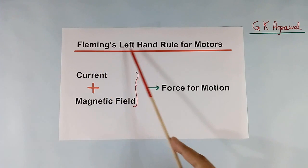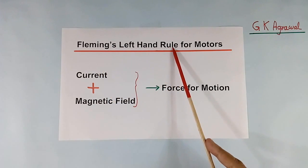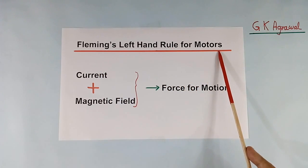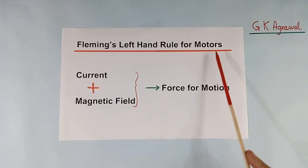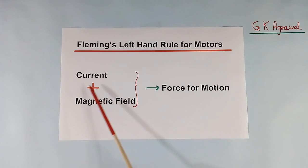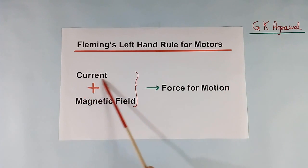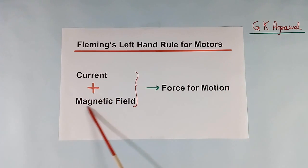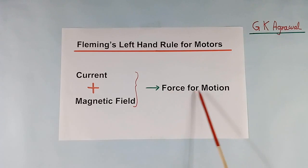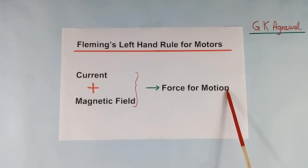Fleming's Left Hand Rule for Motors tells us about the directions of current, magnetic field, and force for motion.